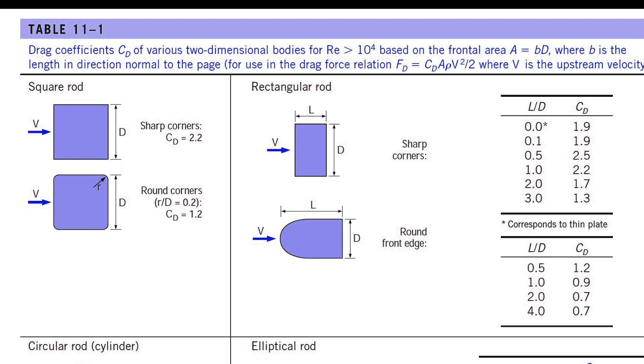The drag coefficient of a long rectangular rod can be reduced almost by half, from 2.2 to 1.2, by rounding the corners.